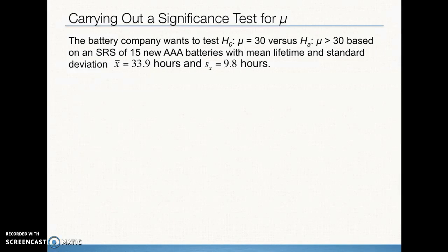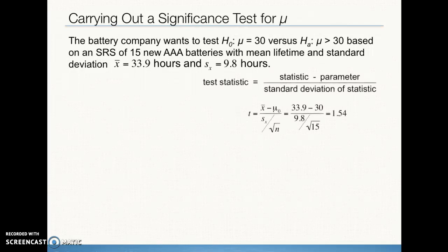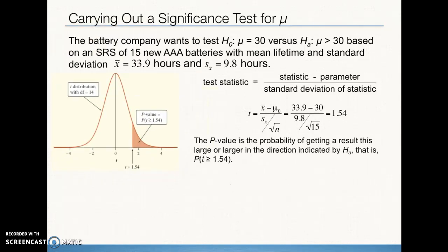Back to the battery example. The battery company tests the null hypothesis mu equals 30 versus the alternative that the population mean is greater than 30. The simple random sample has n equals 15 new batteries, drained completely to measure mean lifetime. We calculate the test statistic by plugging in our sample mean, null hypothesis value, sample standard deviation, and sample size, giving us a positive T test statistic of 1.54. This allows us to calculate the right-hand probability using TCDF or Table B with n minus 1, or 14, degrees of freedom.